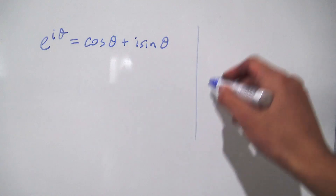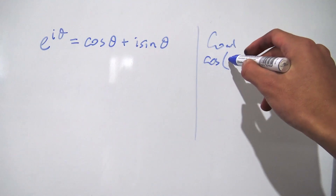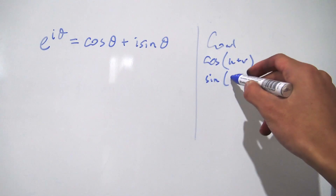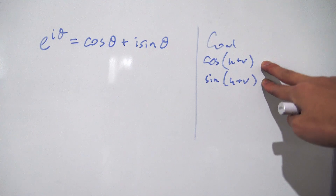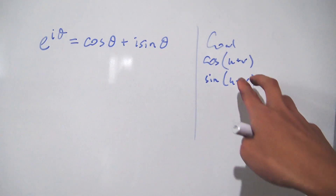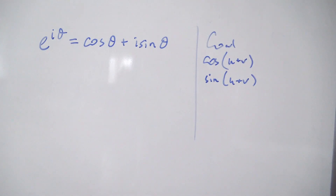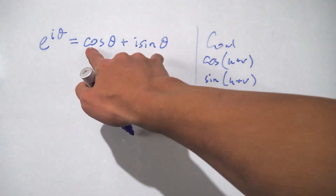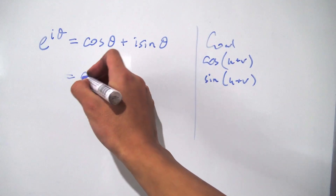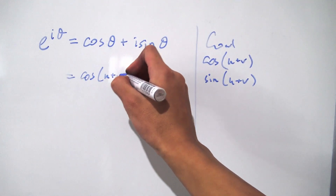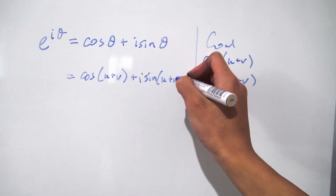Our goal is to redefine the cosine of some angle u plus v as well as the sine of u plus v, and later on we're going to use these to define the differences as well. Since we're dealing with u plus v for both the arguments of the cosine and the sine, we plug this into Euler's formula. So now we have something equal to the cosine of u plus v plus i times the sine of u plus v.